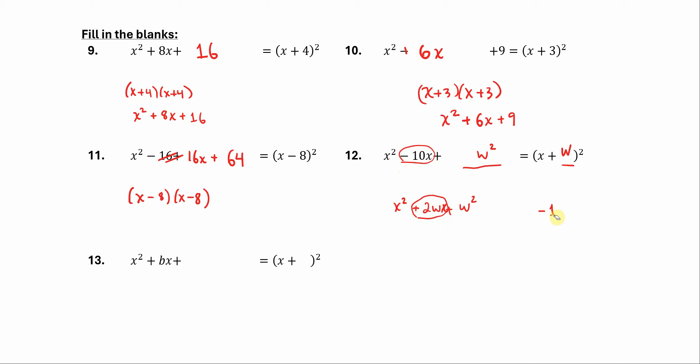Okay, but you see here how this matches: 2wx matches with negative 10x. So that tells us that negative 10 must be equal to 2w, so w must be equal to negative 5. Divide both sides by 2, and w squared must be equal to 25. Okay, so now I can fill in the blanks now.